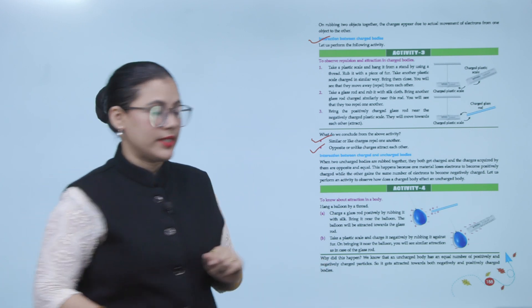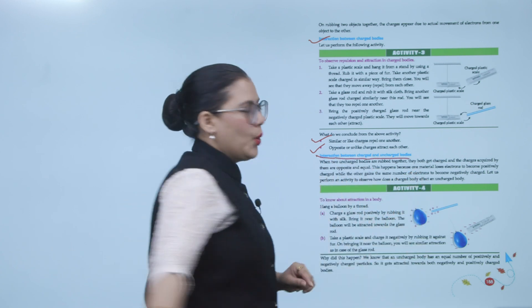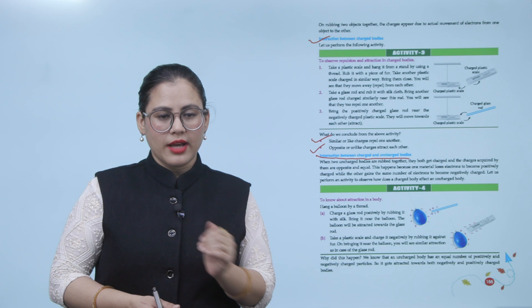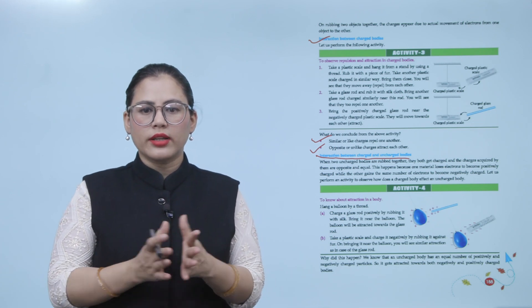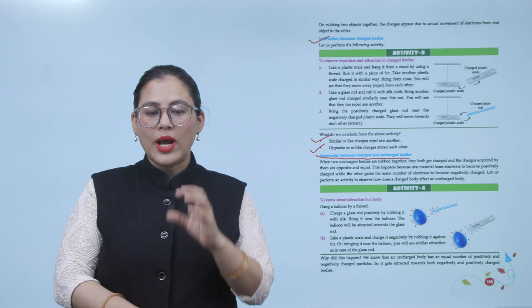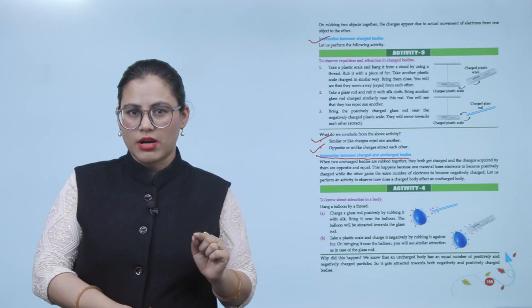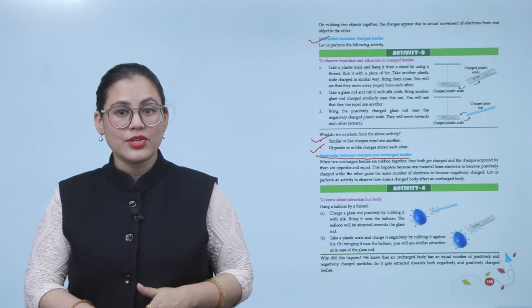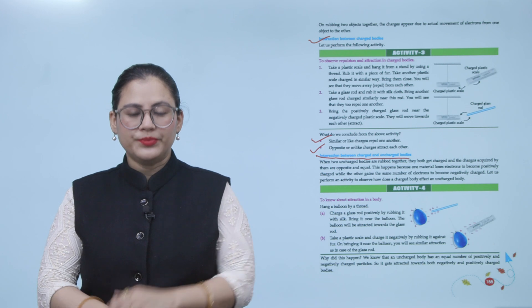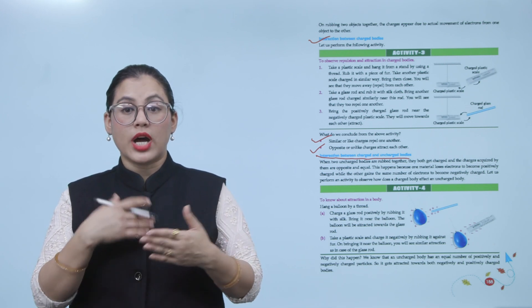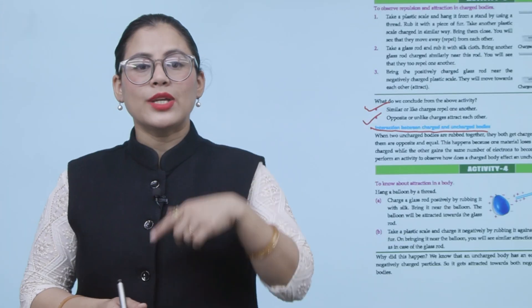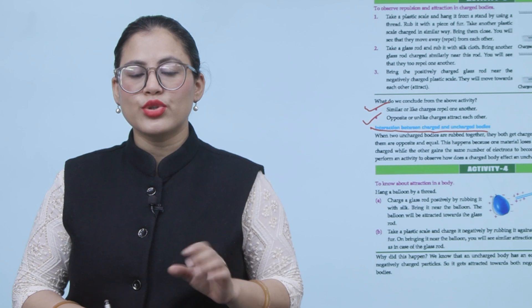Interaction between charged and uncharged bodies: when two uncharged bodies are rubbed together, they both get charged and the charges acquired by them are opposite and equal. This happens because one material loses electrons to become positively charged, while the other gains the same number of electrons to become negatively charged. Jab do uncharged bodies ko rub kiya jata hai, toh dono charge ho jate hain aur charges equal aur opposite hote hain — ek positively charged aur doosra negatively charged.